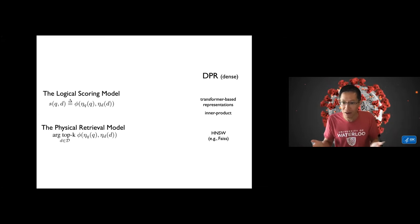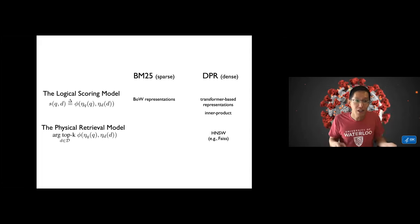But as it turns out, you can look at something like BM25 in exactly the same framework. Here the eta q and eta d are BM25 scoring functions that generate bag of words representations, and here also the phi is inner product.